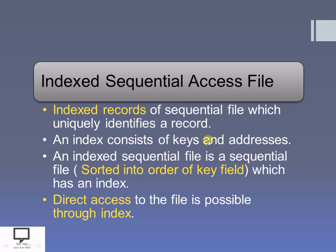That index consists of a key as well as the address of the record. That key is the unique key which is helpful to search a particular record. The index sequential file is basically a sequential file because all the records are in the sorted order of the key field — the key is your index. That key or index will be in sorted order, so it will be easy to search any particular record sequentially. In this way, we can access any record, and we can access that record directly with the help of the index.